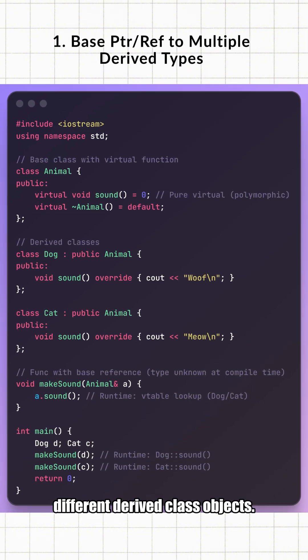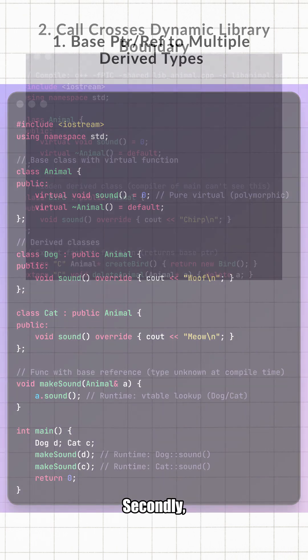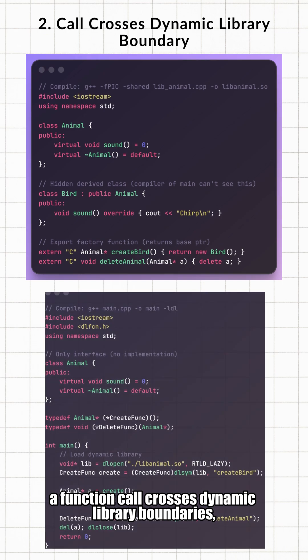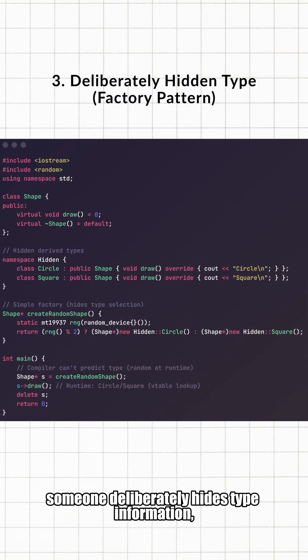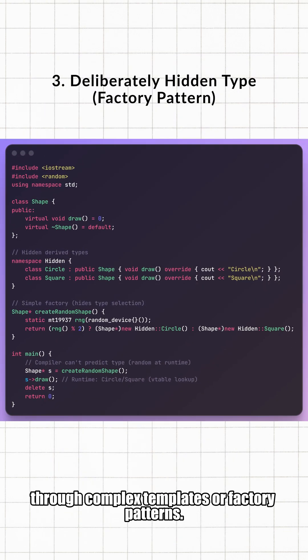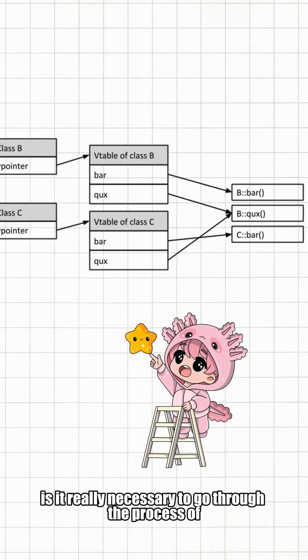Here are some typical scenarios. First, a base class pointer or reference that may point to multiple different derived class objects—for example, a function parameter is a base class reference. Second, a function call crosses dynamic library boundaries and the compiler cannot see the complete type information. Third, someone deliberately hides type information, for example through complex templates or factory patterns. Only in these cases is it really necessary to go through the process of looking up the vtable via the virtual table pointer.